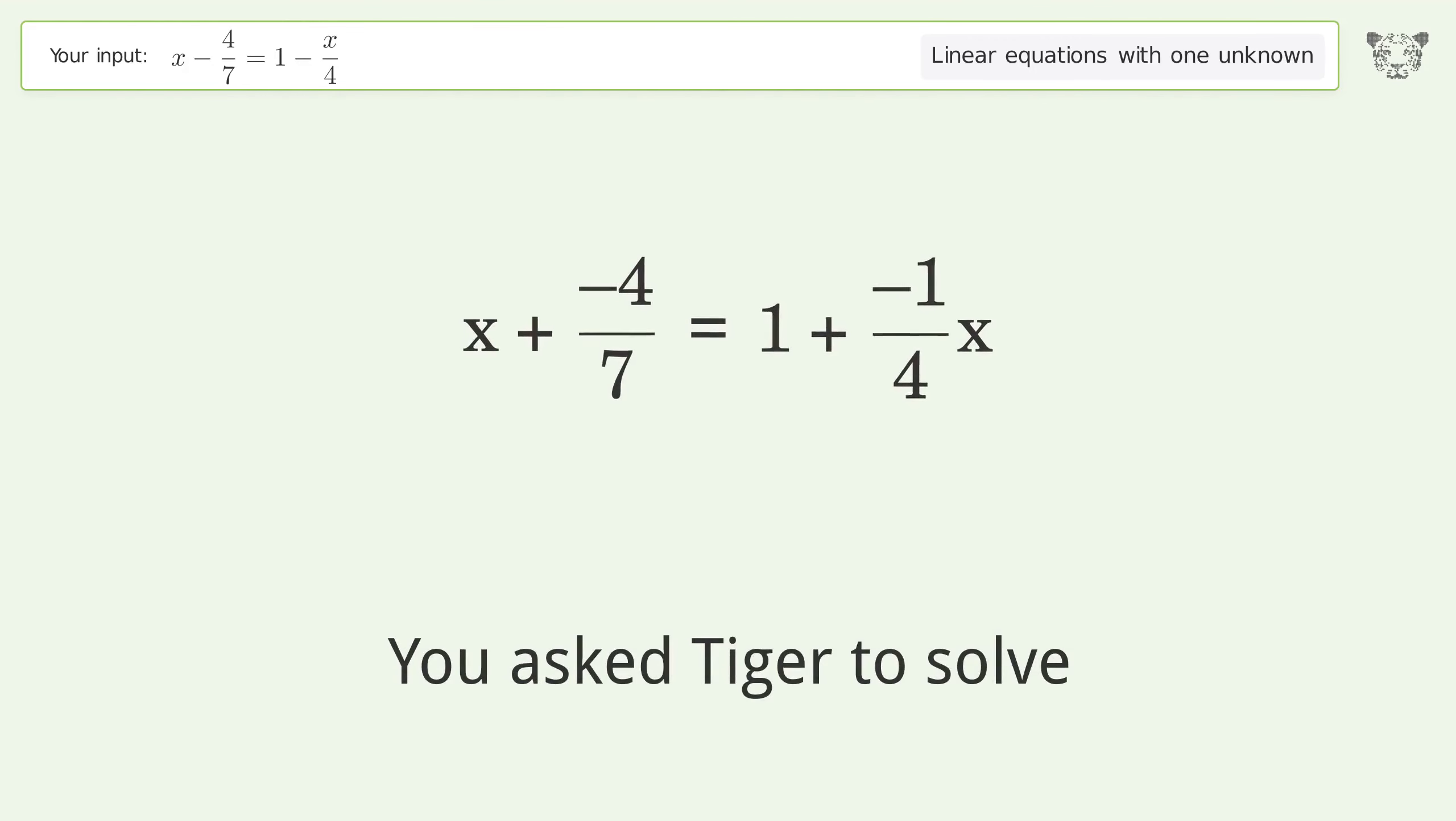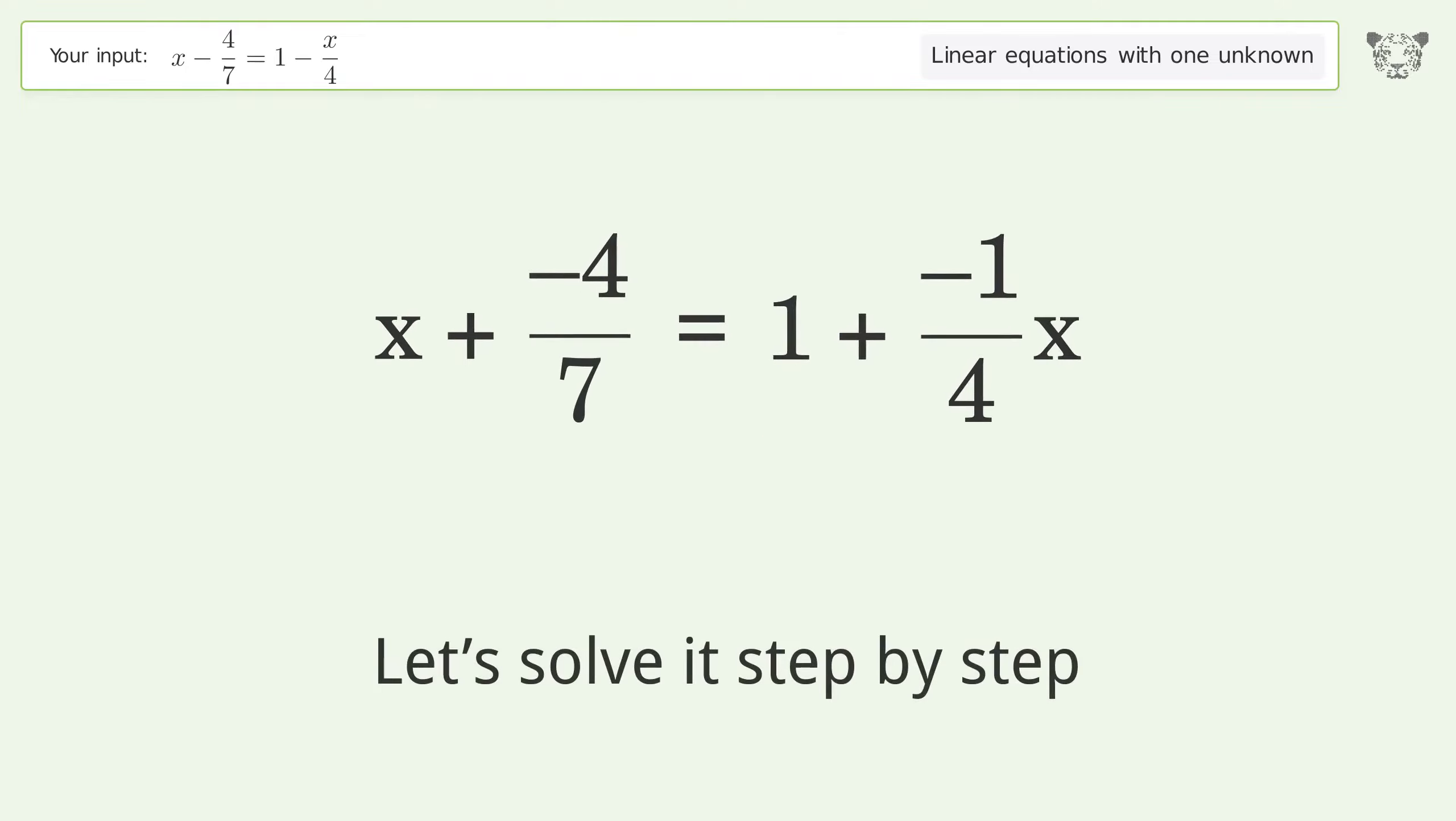You asked Tiger to solve. This deals with linear equations with one unknown. The final result is x equals 44 over 35. Let's solve it step by step.